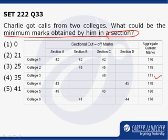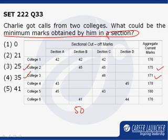The least values are 171 and 175. I have to distribute marks so that Charlie gets admission to college 2 and college 3. Very clearly, I need 50 marks each in sections B and C.